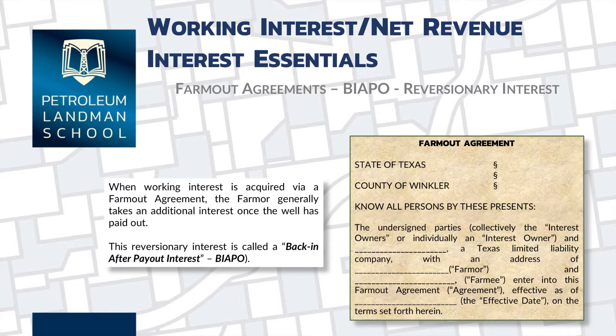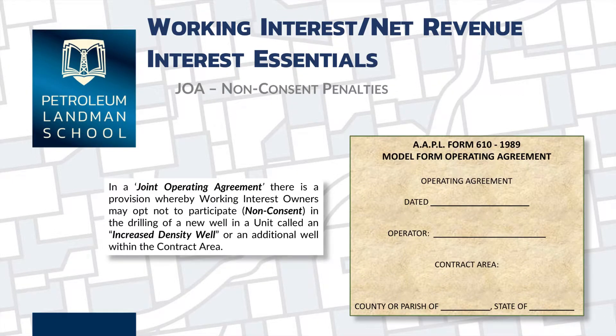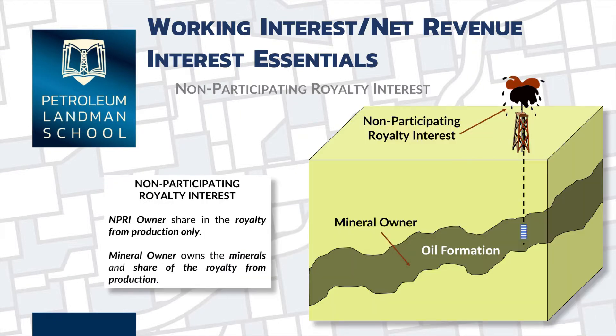This chapter shows how to calculate interest derived from participation agreements, such as farm-out agreements, and allows you to know how to calculate before payout and back-in after payout interests. This chapter helps the student understand how certain revenue interests described in the joint operating agreement can be affected if certain title failures occur in the contract area, or any non-consent elections occur which may affect the reduction in the contract area.